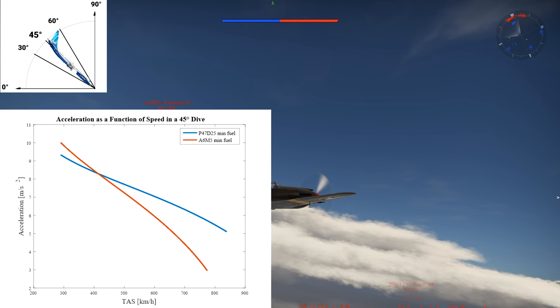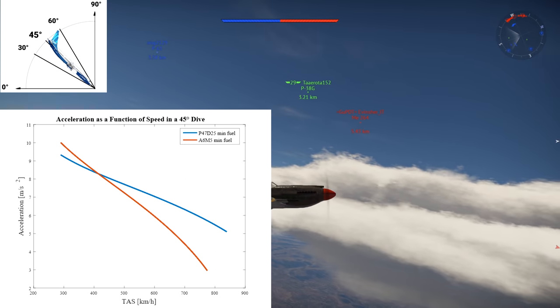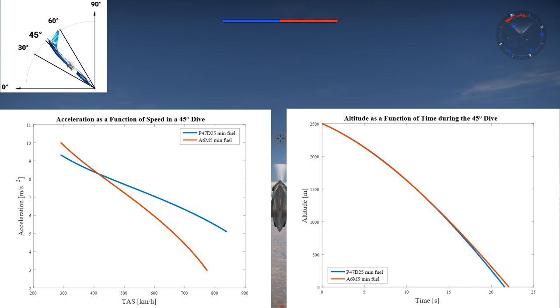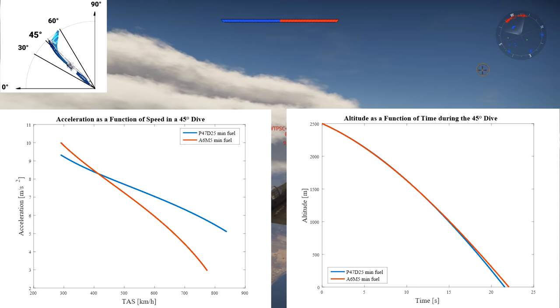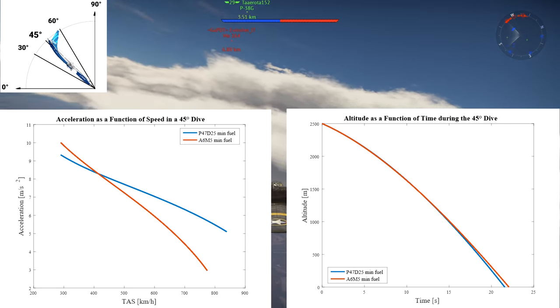Again, the same tendencies appear, with the Zero having the low speed advantage, while the P-47 has the medium and high speed advantages. On the altitude as a function of speed graph, the P-47 now finishes the dive 0.5 seconds before the Zero in a 22 second dive which is a significant improvement for the P-47 compared to the 90 degree dive.